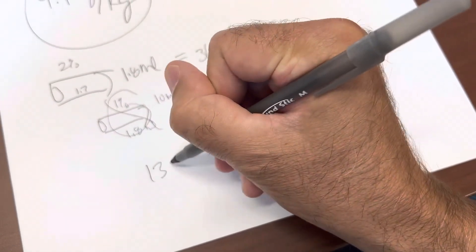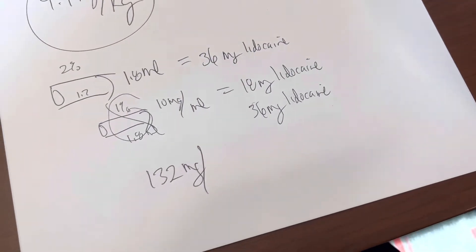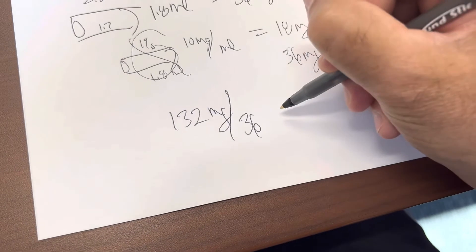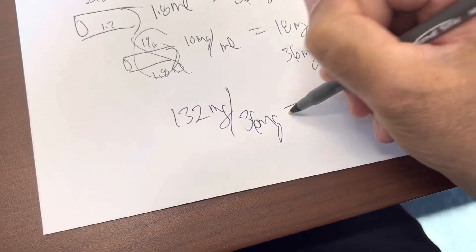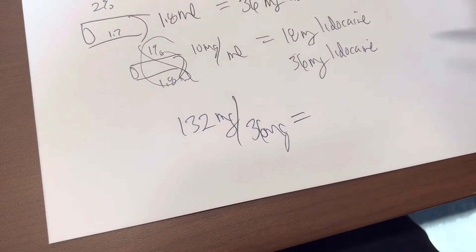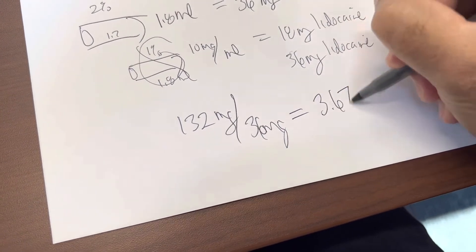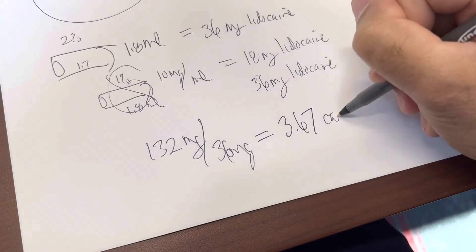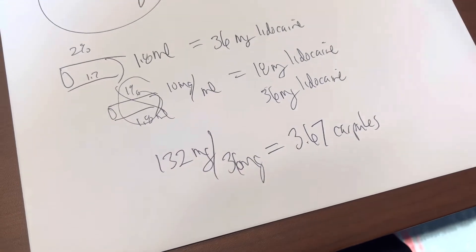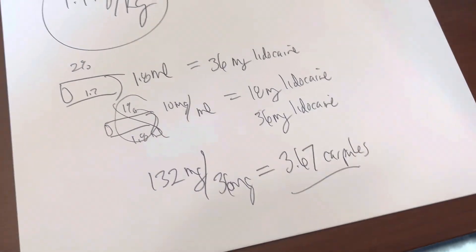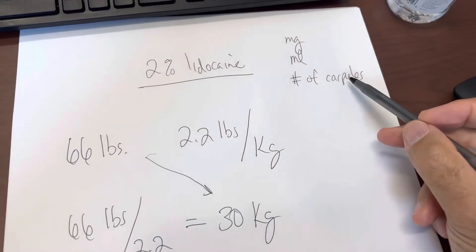So 132 milligrams was the maximum dose. We're trying to figure out the number of carpules. We divide it by 36, and that's going to give us 3.67 carpules. So that answers the number of carpules that we can give.